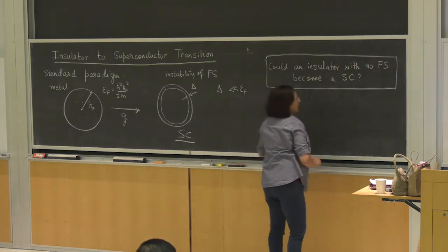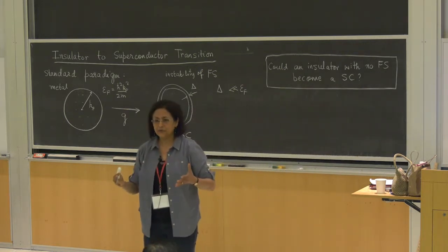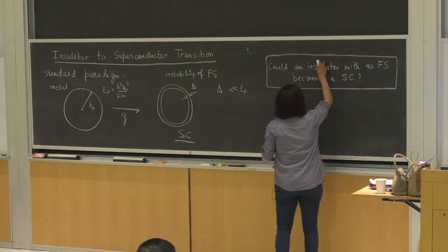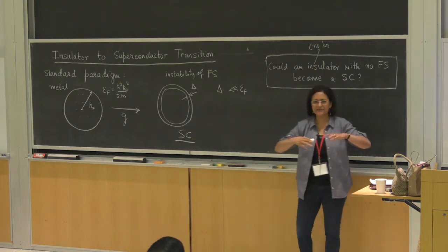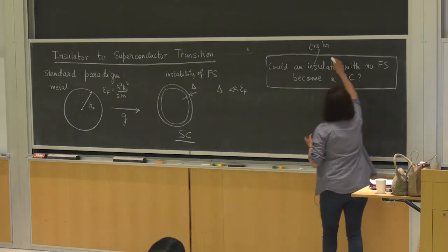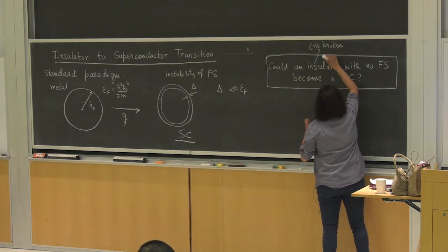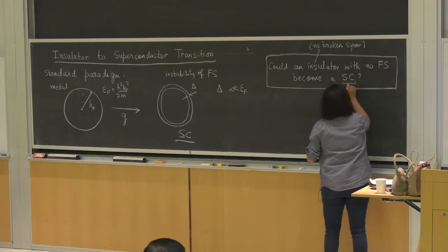I'm going to do this in the simplest example, with no disorder. I'll make a few assumptions: I will take this insulator to be one with no broken symmetry — no antiferromagnetism, no charge density wave. And even the superconductor I'm going to take to be just an s-wave superconductor. Let's restrict the discussion to two dimensions.